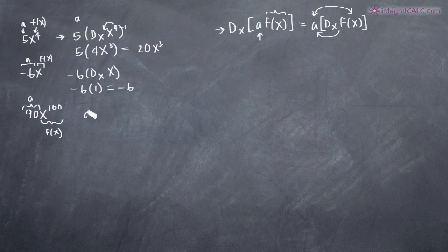So if we factor out the 90 and we multiply by the derivative of x raised to the power of 100, we leave this 90 out in front.